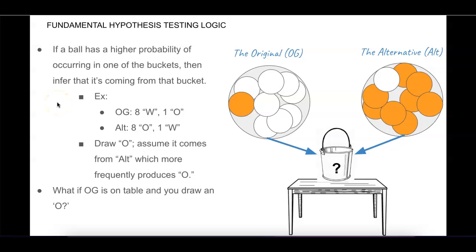Part of this game is that you do know the distribution inside each bucket — you just don't know which bucket is on the table. So you know that the probability of drawing an orange ball from the original bucket would be one out of nine. That probability means that in the long run, that's how often you'd pull an orange ball on average — it doesn't mean that if you draw nine times, exactly one will be orange. On average, that's how many times the orange ball comes out of this bucket. You're going to have to guess which bucket is on the table based on the sample you took.